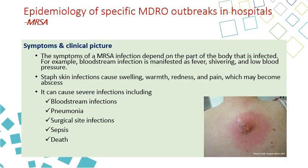For the signs and symptoms of MRSA, there are no specific signs and symptoms — it depends on where the infection occurred. If infection happened in the blood, you get bloodstream infection; if in the lung, you get pneumonia. Common infections include bloodstream infection, pneumonia, surgical site infection, and sepsis. For skin infection, you will have swelling, warmth, redness, and pain at the site of infection or abscess.